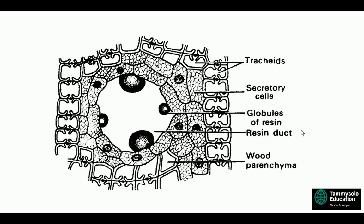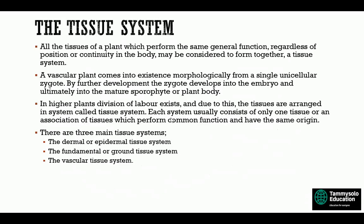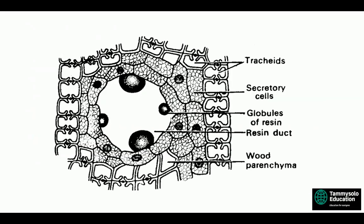This is an example of a secretory tissue — we have the tracheids, secretory cells, globules of resins, resin ducts, and so on. This brings us to the end of this lecture series. We will continue on tissue systems in the next lecture.